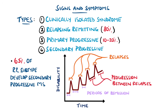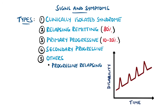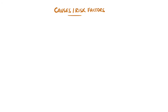Around 65% of relapsing-remitting patients will go on to develop secondary progressive multiple sclerosis, most frequently after around 20 years. Other forms include progressive relapsing, where there is a gradual deterioration from onset that also features relapses, and fulminant multiple sclerosis, where there are multiple relapses and rapid progression.